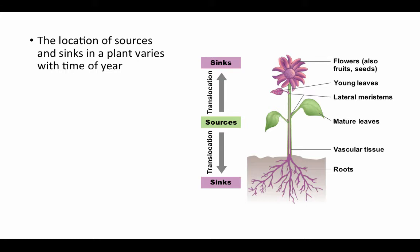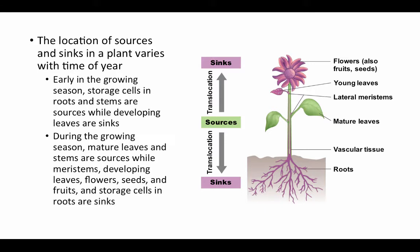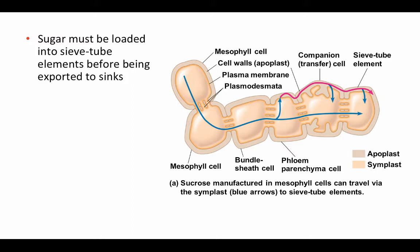Tubers — things like potatoes — are modified stems growing underground, and modified leaves used for nutrient storage include things like onions. Early in the growing season, storage cells in the roots and stems are sources, releasing stored carbohydrates as energy for the growing plant, while developing leaves are sinks. Later in the growing season, mature leaves actively generating sugar become sources, while meristems, developing leaves, flowers, seeds, fruits, and storage cells in roots and tubers become sinks.